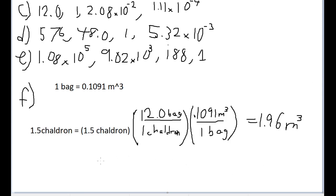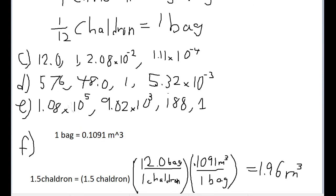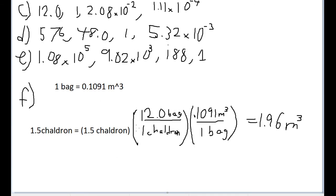Here is the chain-link conversion: we start with 1.5 chaldrons. From Part C we found that one chaldron equals 12 bags, so we use that conversion to go from chaldrons to bags. Then we multiply by 0.1091 cubic meters per bag. Completing this multiplication gives a volume of 1.96 cubic meters, and that is our final answer.